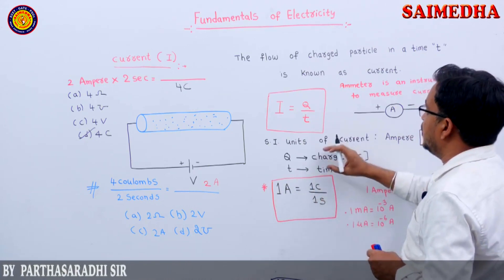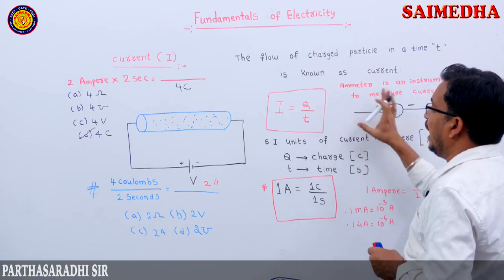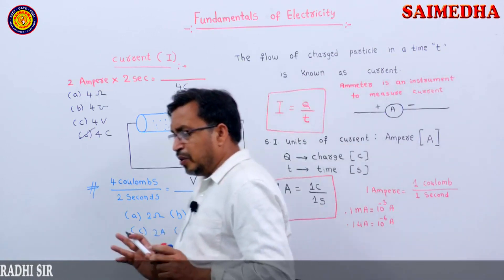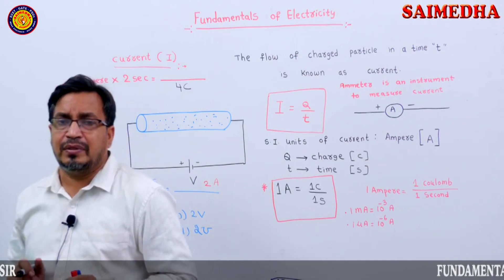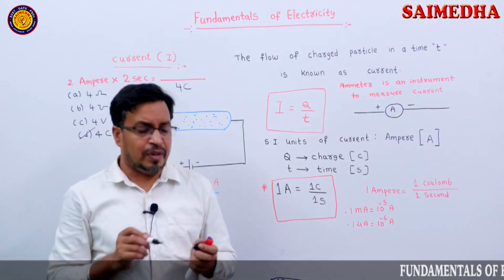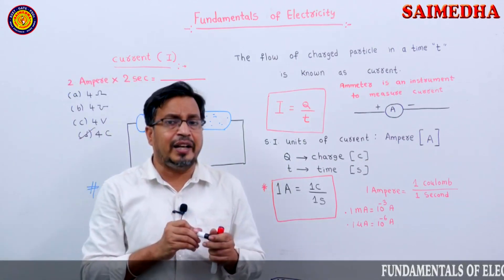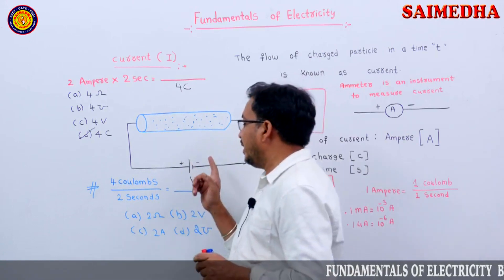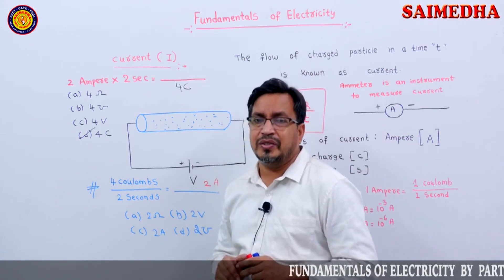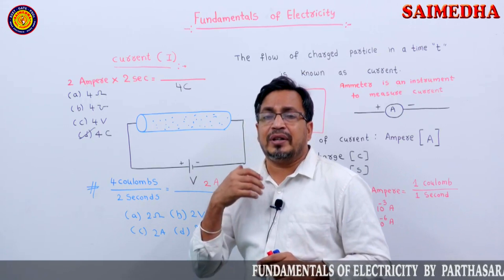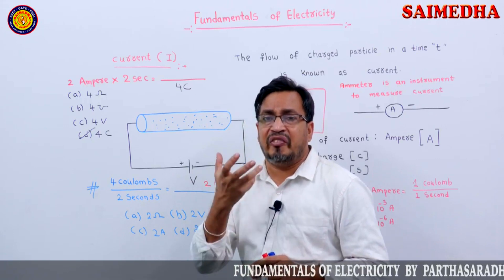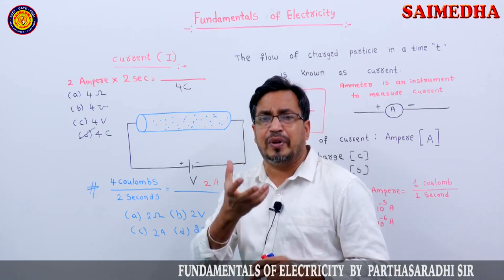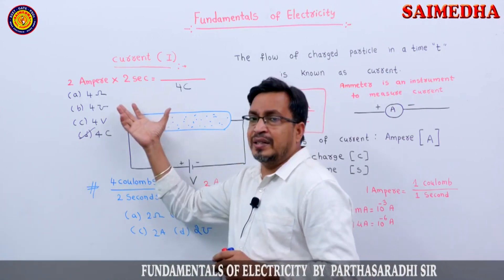Very important: definition of current, formula, units, and 1 ampere equals 1 coulomb by 1 second. Which instrument is used to measure current? Ammeter. Next, we will discuss potential difference, voltage, or potential.